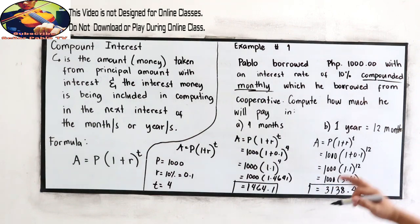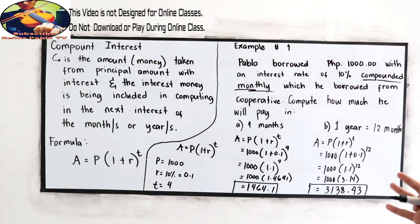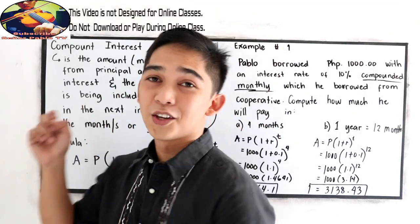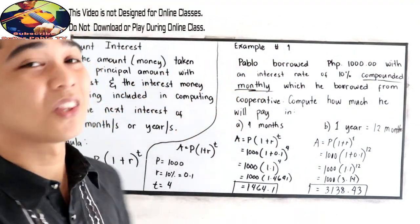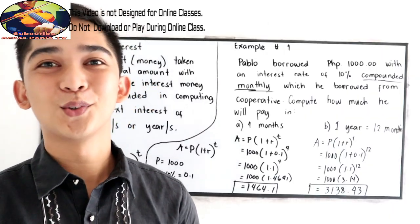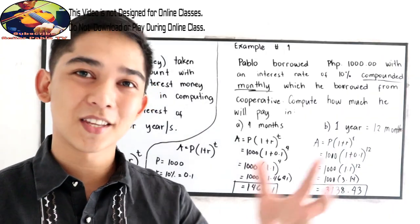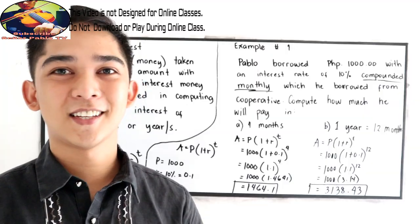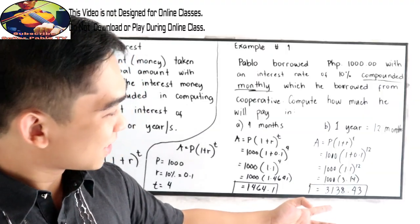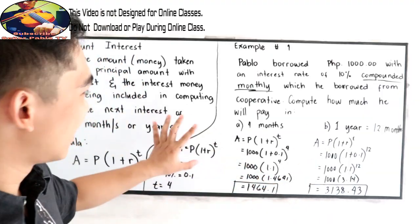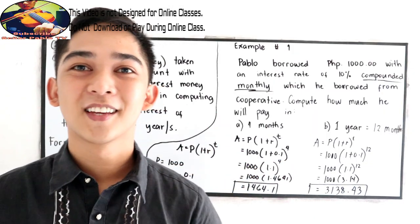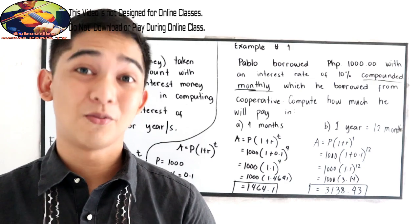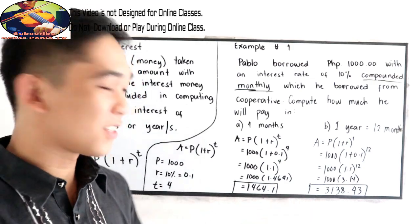Notice that the money will become 3-fold after a year. So if you want to lend money to someone, use the compound interest if you want to gain your money in a good interest. But I think this is too much greedy.